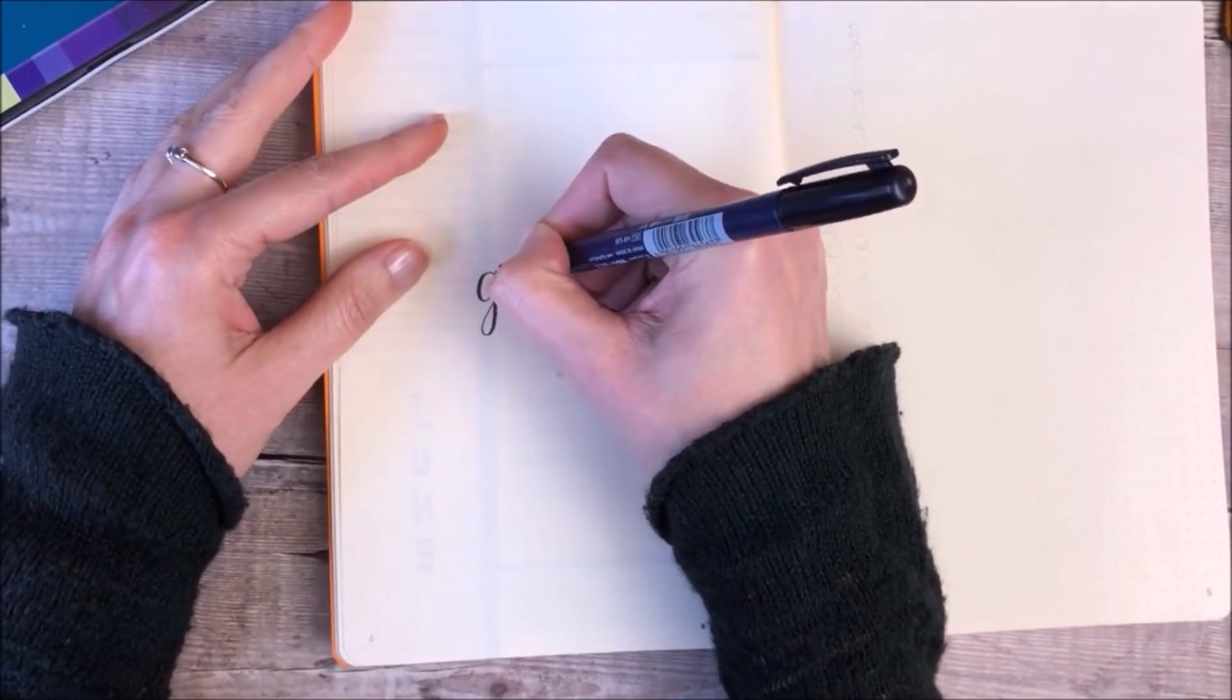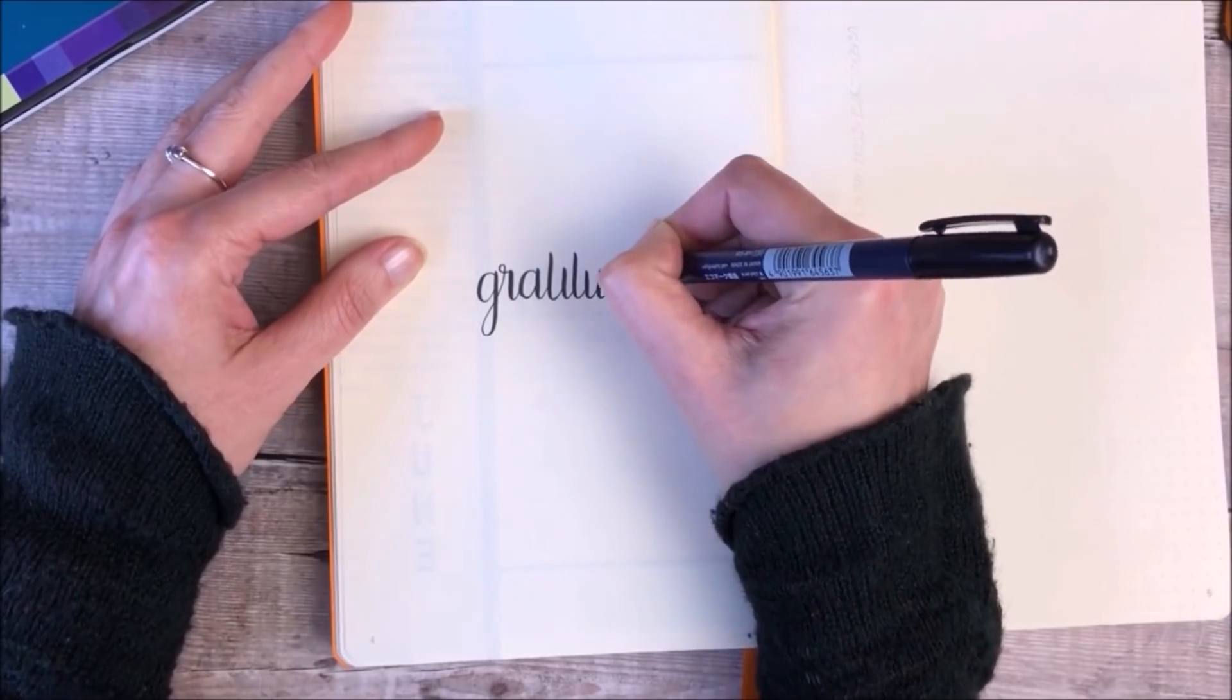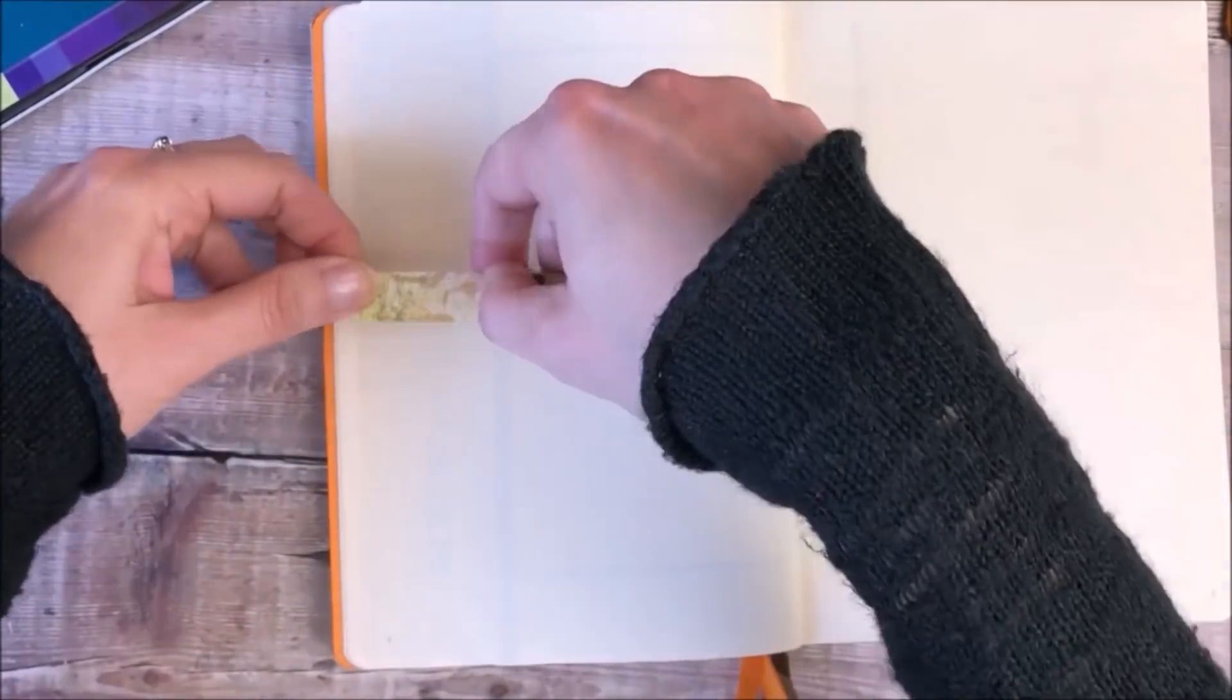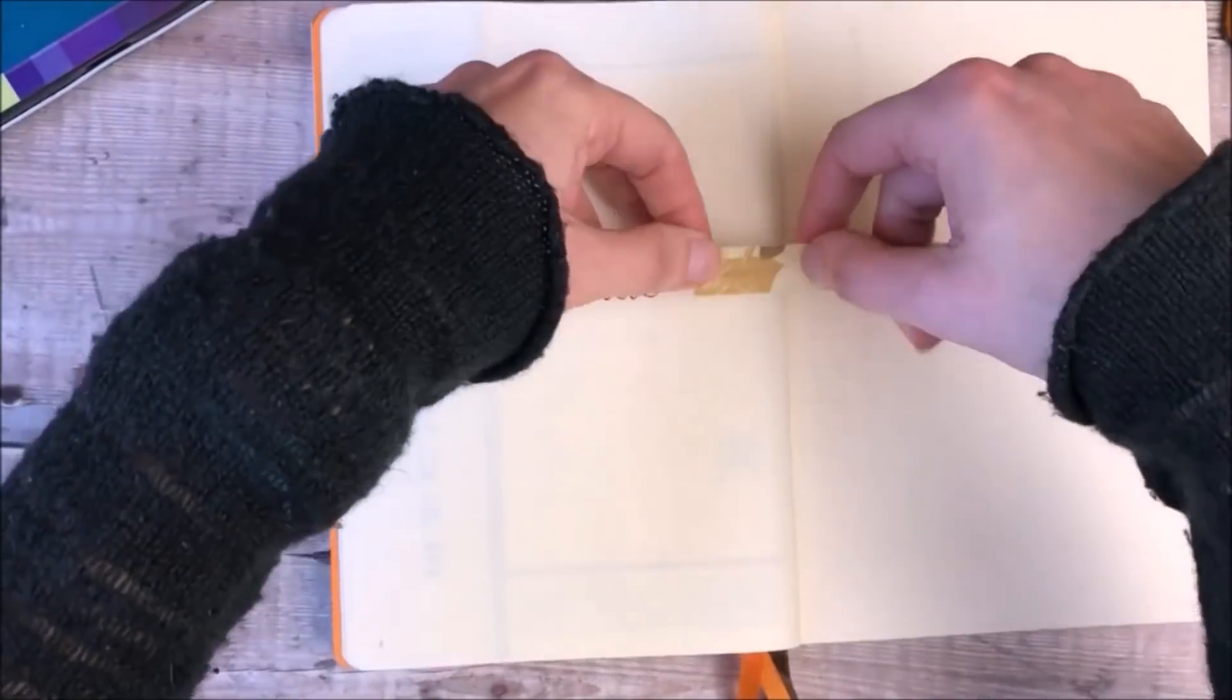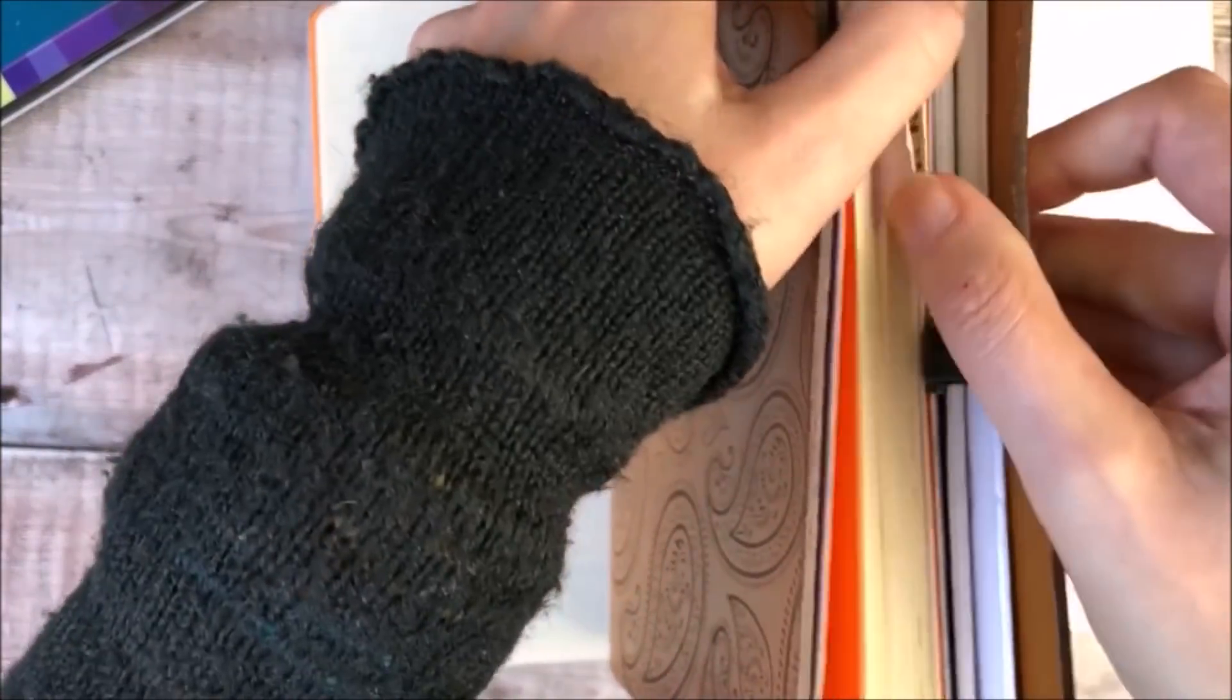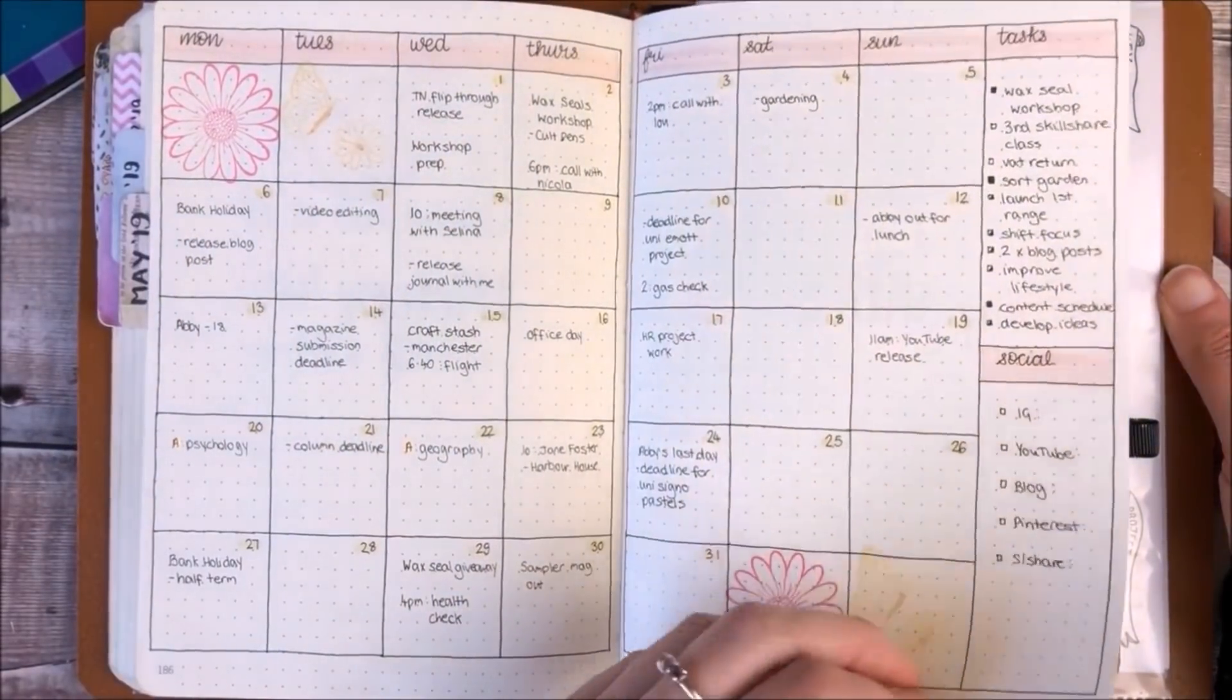The next pages I'm setting up are for my gratitude log and my habit tracker. I'm simply writing gratitude in the middle of the page and then adding washi either side. This is how my gratitude log and habit tracker is looking part way through May.